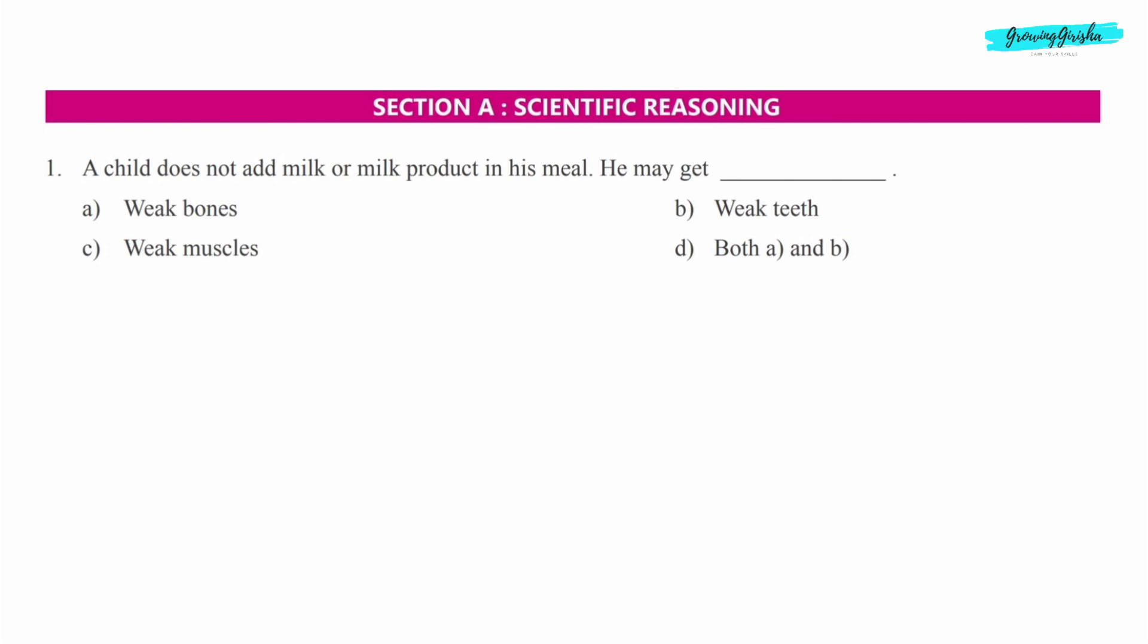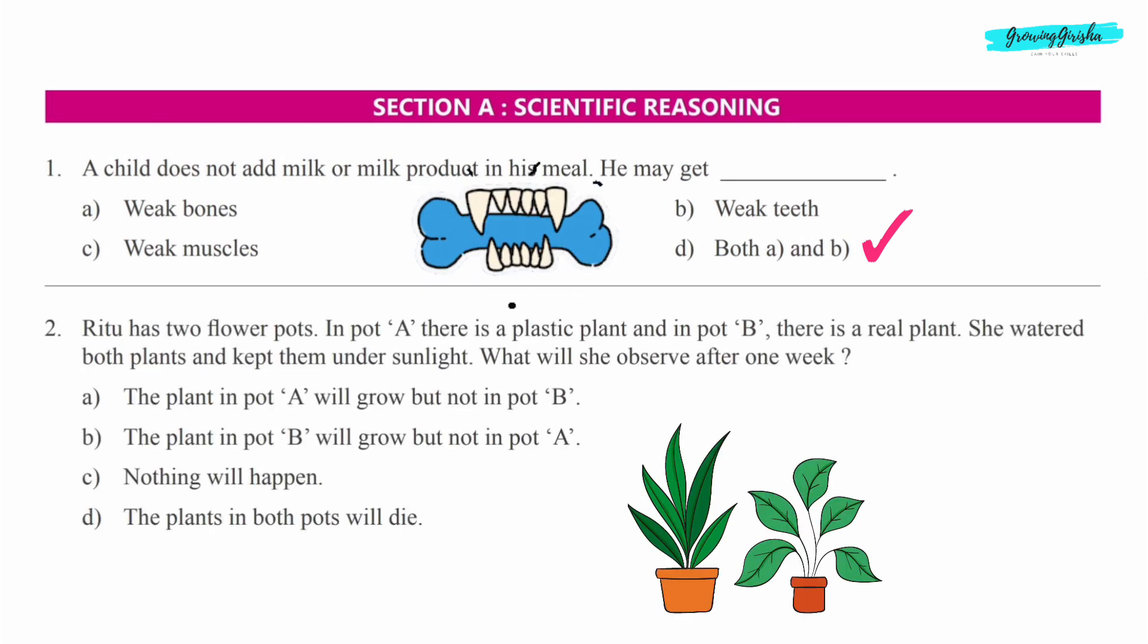He may get: a) weak bones, b) weak teeth, c) weak muscles, d) both a and b. Option D, both a and b, because we need calcium for bones and teeth.